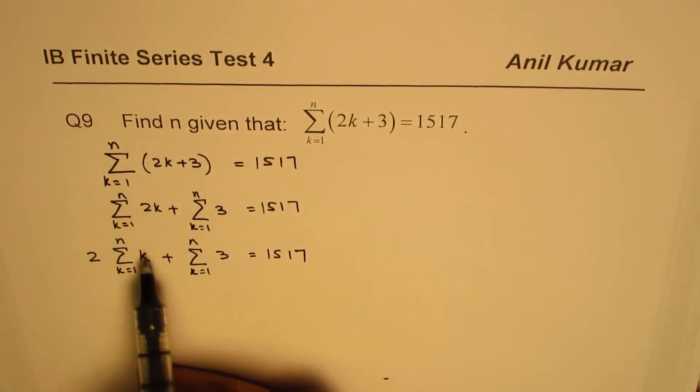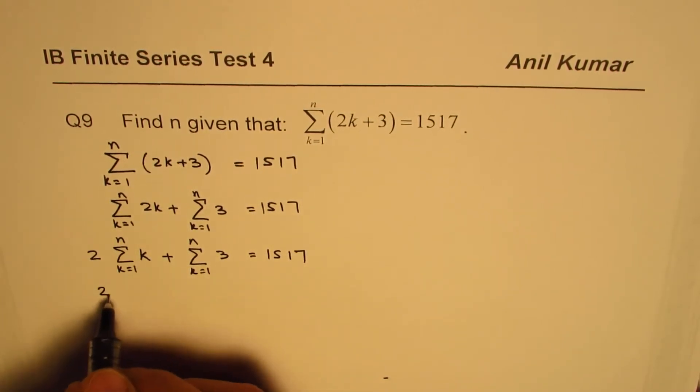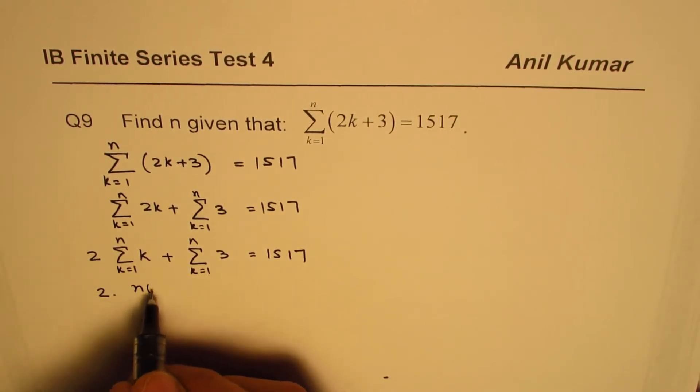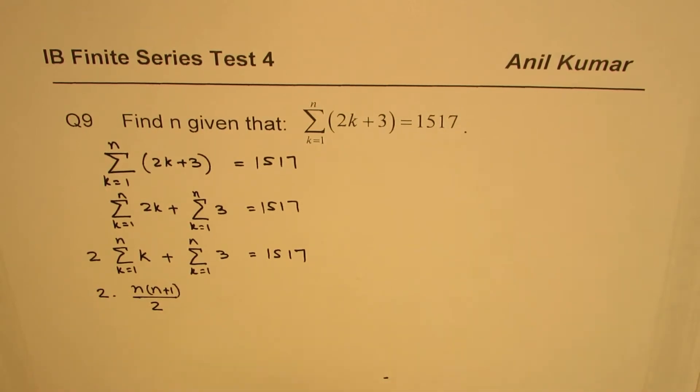Now clearly we can use the formula. This sum of first n natural numbers. So we could use the formula here. So we can say 2 times and this portion is n times n plus 1 divided by 2. So we know the series that the sum of natural numbers is that much. I hope you remember.